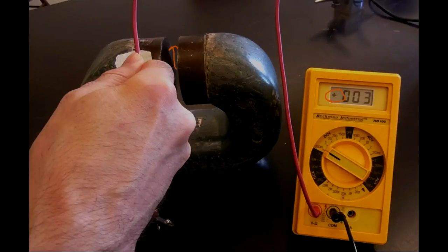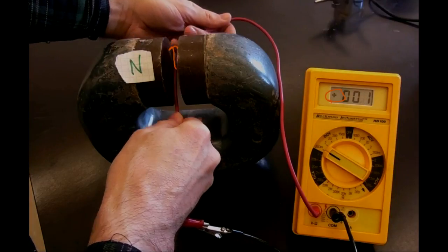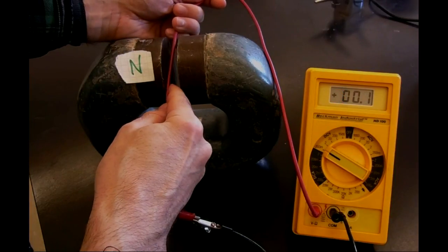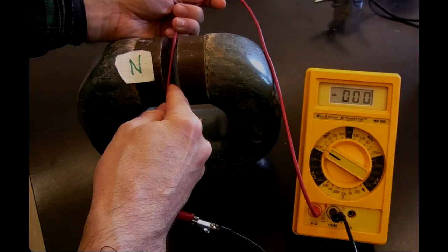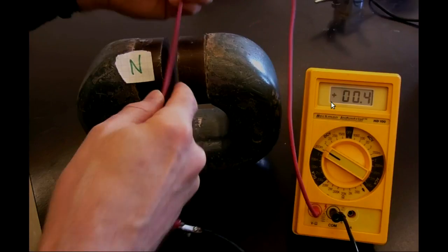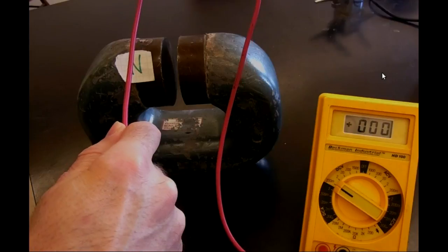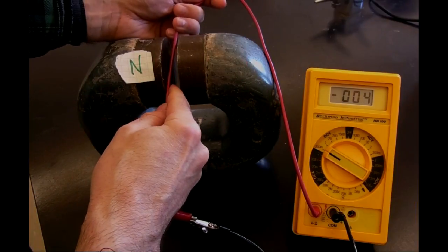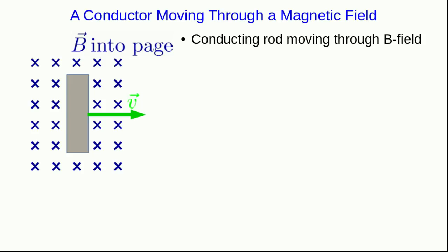And the final thing to notice is that if I hold the wire steady in between the poles of the magnet, then there is no potential difference detected. Clearly, something is going on with magnetic forces.